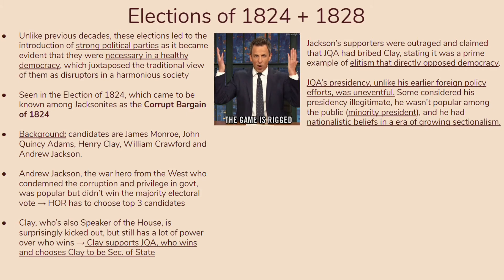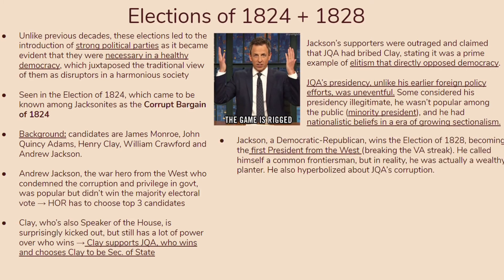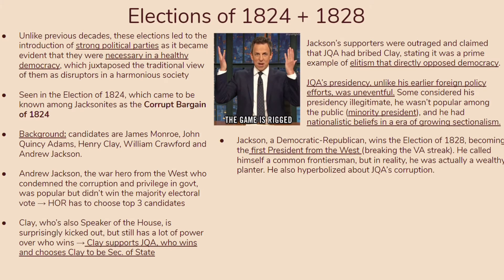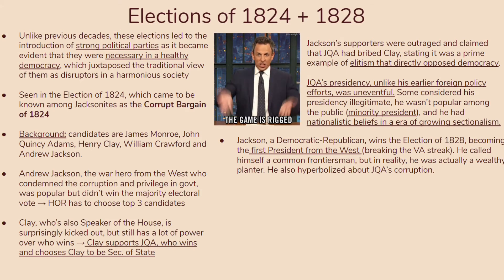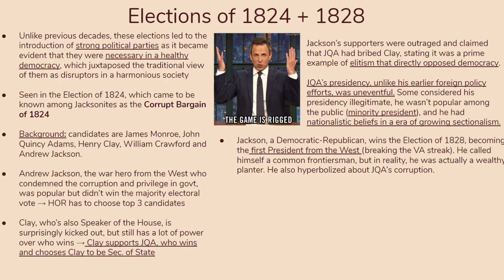This all changes in the election of 1828. Jackson, a Democratic Republican, ends up winning, becoming the first president from the West — breaking the Virginia streak, as all previous presidents had been from Virginia. He called himself a common frontiersman, but in reality he was actually pretty wealthy. He also hyperbolized JQA's corruption, calling him elitist and corrupt, which was somewhat hypocritical since Jackson himself would come to be pretty corrupt and was also quite wealthy.